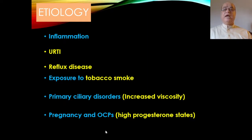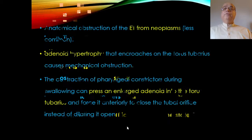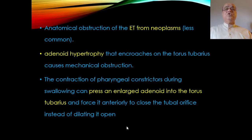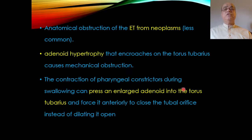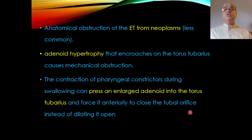During pregnancy and in ladies on oral contraceptive pills, due to high progesterone states, a similar situation can occur. Anatomical obstruction of the Eustachian tube — for example from neoplasms — is less common compared to allergic and inflammatory causes. Adenoid hypertrophy encroaches on the torus tubarius, causing mechanical obstruction, and the contraction of pharyngeal constrictors during swallowing can press enlarged adenoids into the torus tubarius.